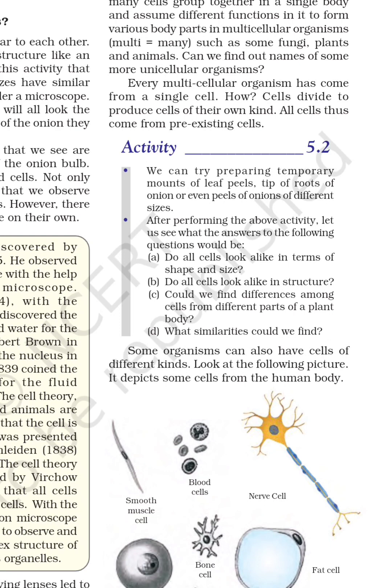These organisms are called unicellular, and these are their examples. On the other hand, many cells group together in a single body. If an organism is made of many cells together, it is called multicellular — like humans, whose bodies have many cells. When an organism is made up of one cell it is called unicellular; when made up of many cells it is a multicellular organism. Examples of multicellular organisms: fungus, plant, animal.